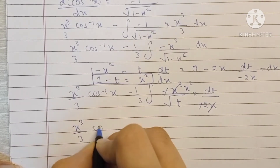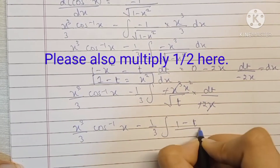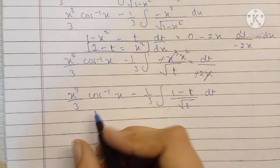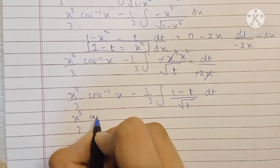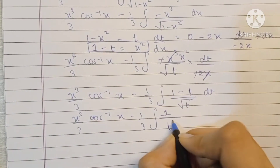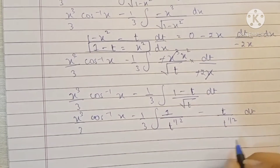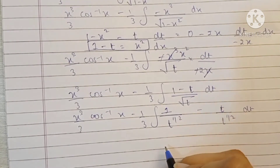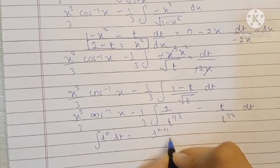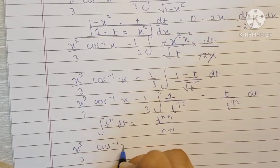So we have x cubed by 3 cos inverse x minus 1 by 3 times the integral. Writing root t as t raised to the half, we get 1 upon t raised to half minus t upon t raised to half dt. Taking these to the numerator gives negative powers, and using the integration rule that the integral of t raised to n equals t raised to n plus 1 upon n plus 1, we integrate t raised to minus 1 by 2 to get t raised to 1 by 2.